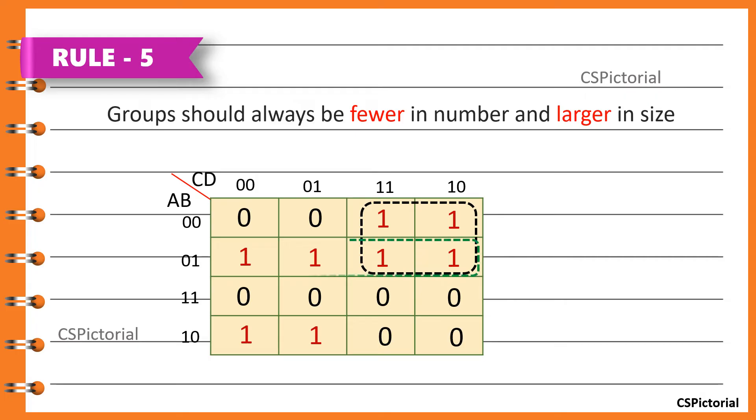Again, we prefer making a quad than making a pair, even if it is overlapping. And finally, we make a pair because there are only two adjacent ones. Now the grouping is correct. It has fewer but larger groups.